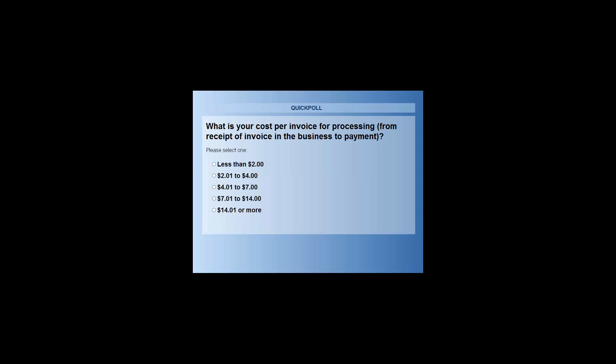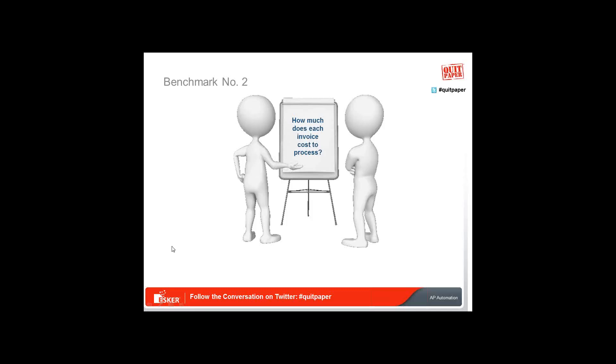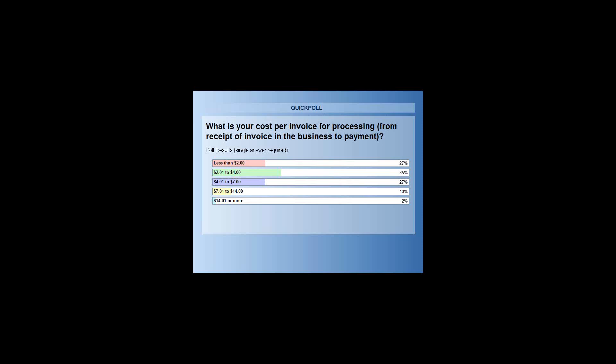64% of you responded — our best so far. It is nice to see a pyramid here that is top-heavy: 27% of you are coming in at less than $2 per transaction, and only 2% at $14 or more. About 60% of you are in the middle with $2 up to $7 per transaction. Back to you, Julie.